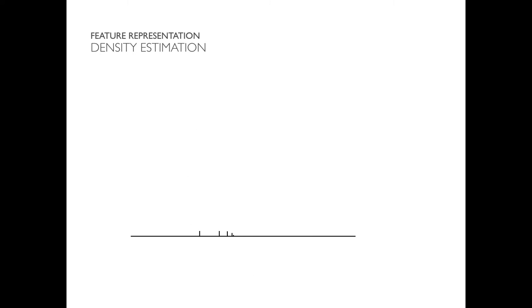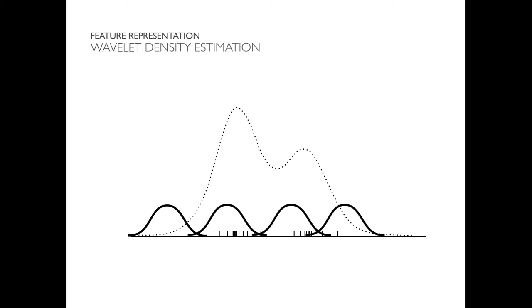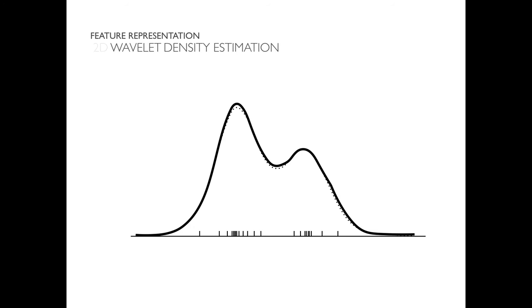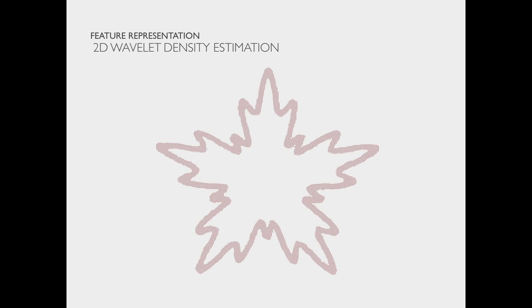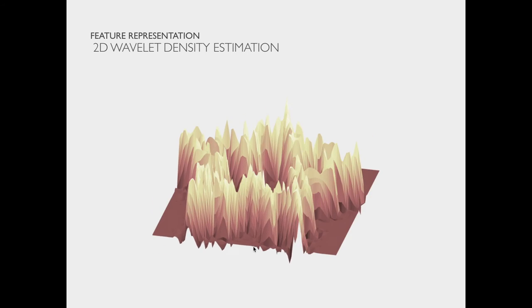Our feature representation is extracted by estimating probability density functions. One way to estimate a PDF is with wavelets, because of their special mathematical properties. This estimation gives us wavelet coefficient vectors as our feature representation. In 2D, we actually do the same thing. We take a point set and we estimate a density function over it.